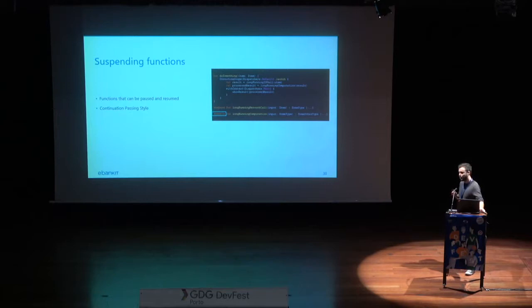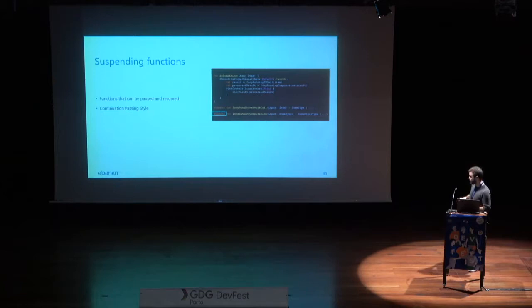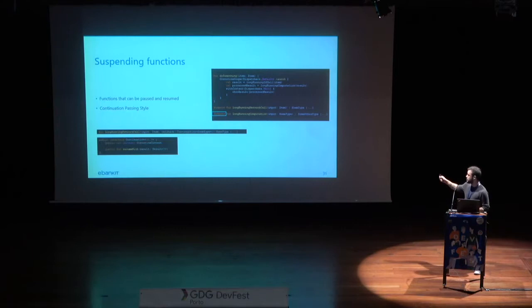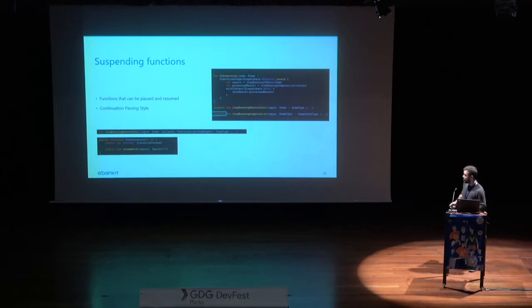At the heart of coroutines is a concept called suspending functions. Suspending functions are functions that can be started, paused, and resumed whenever you want. They are implemented using a continuation-passing style, so whenever you write the suspend keyword it gets translated to that method signature, and a continuation object gets passed around containing the state of your suspending function.